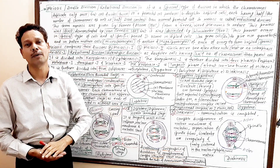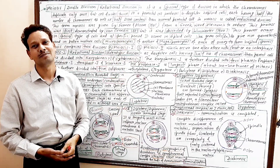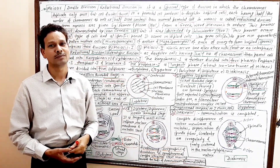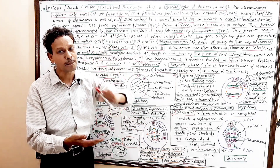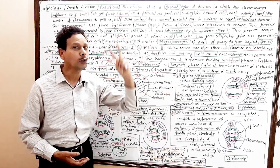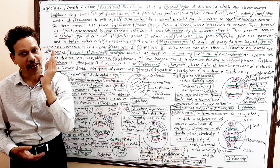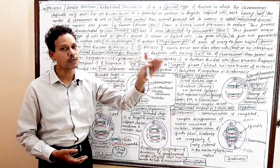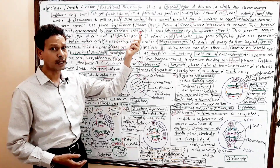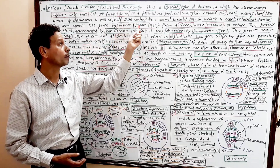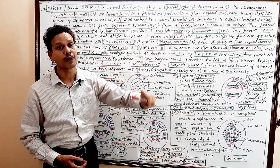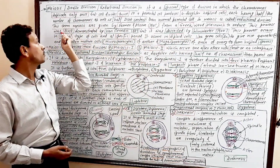The word 'meiosis' was given by Farmer and Moore. It is derived from the Greek language — the Greek word 'meom' means to reduce. The DNA content is reduced to half: the parent cell having 2n number of chromosomes, for example 46, is reduced to half — 23 (n). This term was given by Farmer and Moore in 1905.